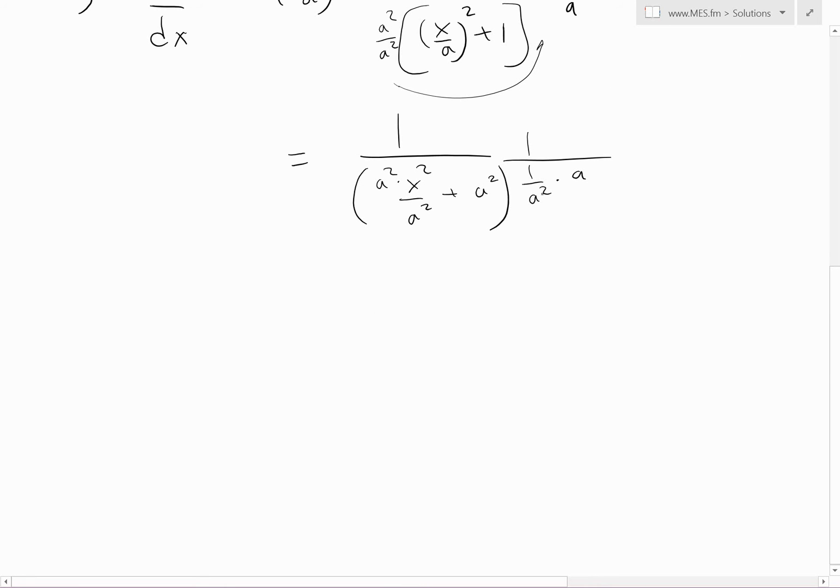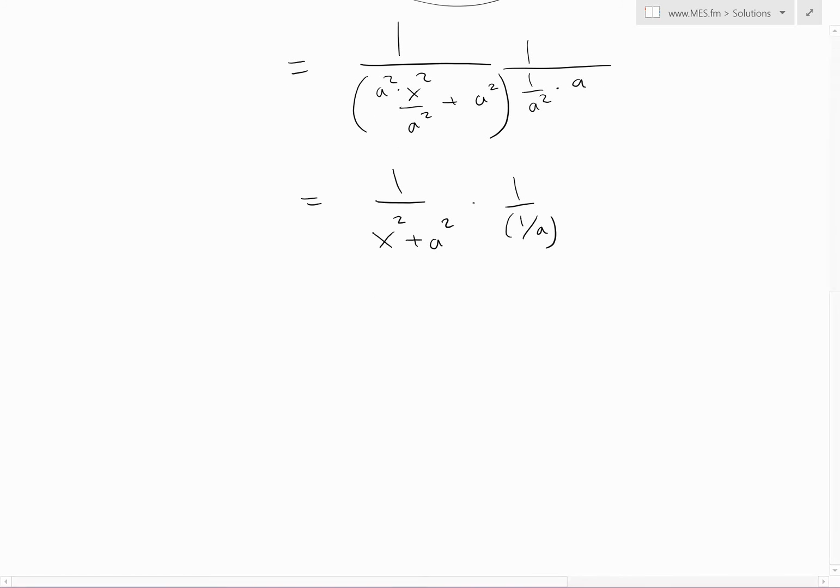This part here will cancel. We'll have 1 divided by a, and then these a squareds cancel. What we're left with is x squared plus a squared, and now we're times it by 1 over a.